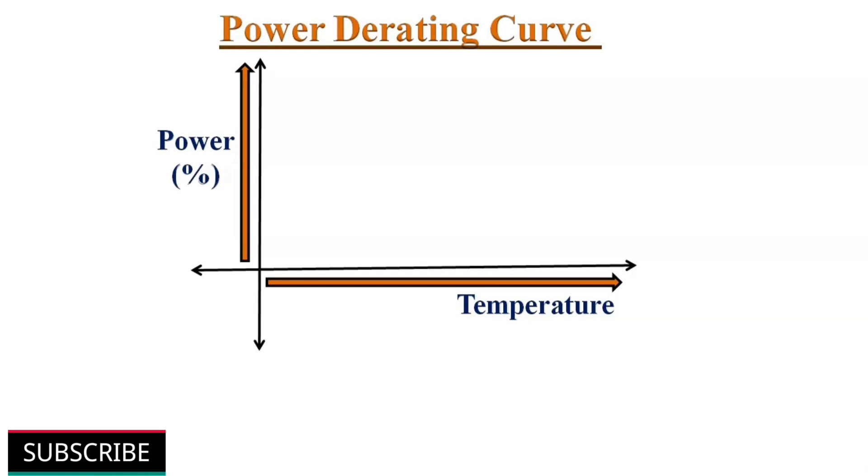Sometimes manufacturer provides power derating curve. Typically, resistors are rated for a temperature of 70 degree centigrade. Above this temperature, resistor starts to derate. This means the resistor can be utilized at a reduced power level. This is illustrated by a power derating curve. So while selecting a particular resistor, we must consider operating conditions or ambient temperature.